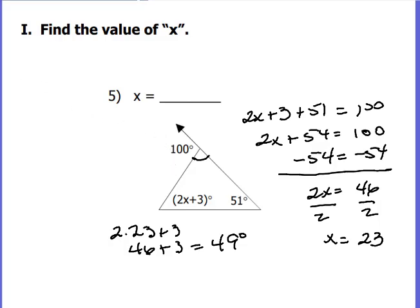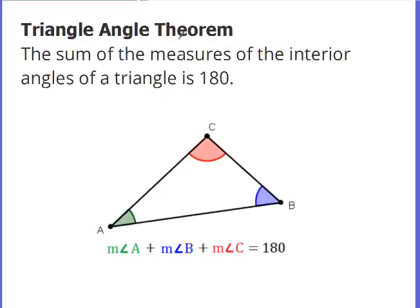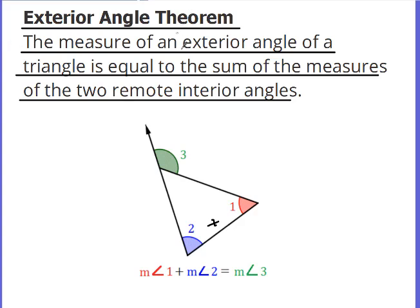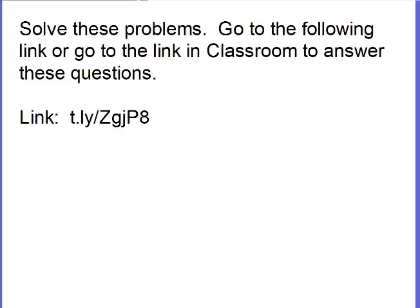So what we've talked about today is two things: the triangle angle theorem, which means the three angles of a triangle always equal 180 degrees, and the exterior angle theorem, which says the exterior angle equals the sum of the two remote interior angles. That's the eighth grade concept, and that's what your assignment is about today. The link will be on the assignment, so just click on the link there.